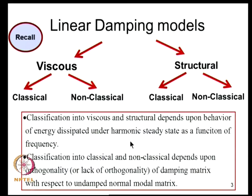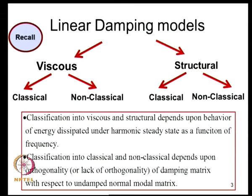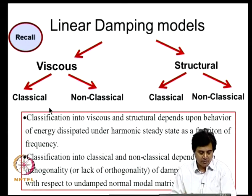In our discussion on damping models we saw that there are two alternative strategies to model damping within the framework of linear system modeling: one is viscous damping, and the other is structural damping. The classification into viscous and structural depends upon the behavior of energy dissipated per cycle as a function of frequency. We also classify damping models as classical or non-classical, based on whether undamped normal modes are orthogonal to the damping matrix or not. If the damping matrix is orthogonal to the undamped normal modes, the damping model is classical; otherwise it is non-classical.